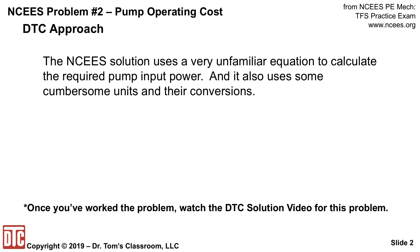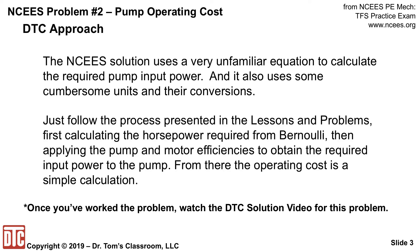The NCES solution uses a very unfamiliar equation to calculate the required pump input power, and it uses some cumbersome units in their conversions — that is totally unnecessary. Just follow the process presented in the lessons: first calculate the horsepower required from Bernoulli, Q gamma E, then apply the pump and motor efficiencies. In this case, you're given a motor efficiency to obtain the required input power of the pump, and from there the operating cost is a simple calculation.